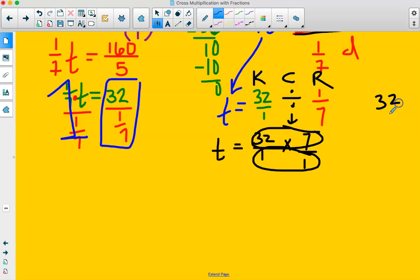Then I multiply the denominators and the numerators. 32 times 7. 2 times 7 is 14. I carry the 1. 3 times 7 is 21 plus 1 is 22. So I get 224 over 1.